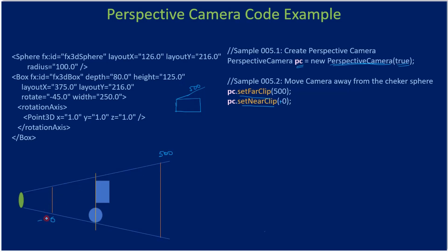Let's say the near clip is at z=-100. The XY plane is at z=0, and that's where our box and sphere are. We shifted the near plane to match that location in this example — but just for understanding you could place it elsewhere, such as near clip at -50. Whatever falls between the near and far clip we can view using the perspective camera.